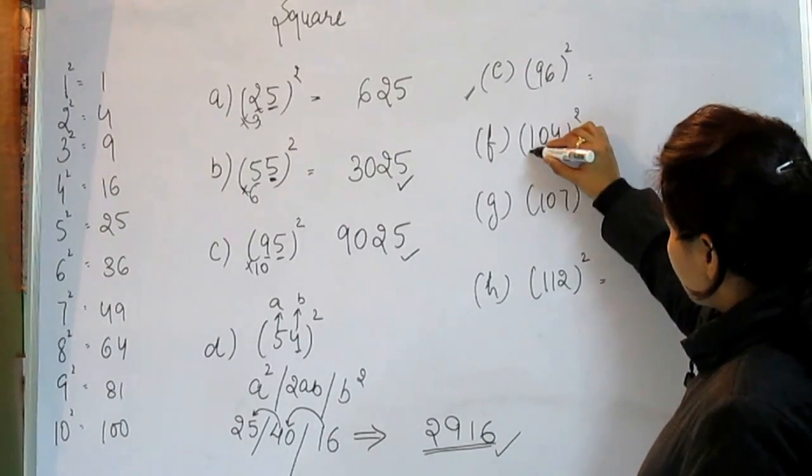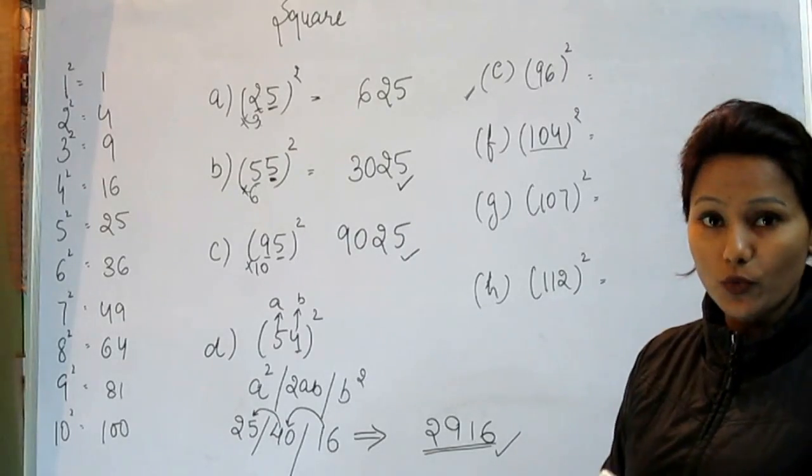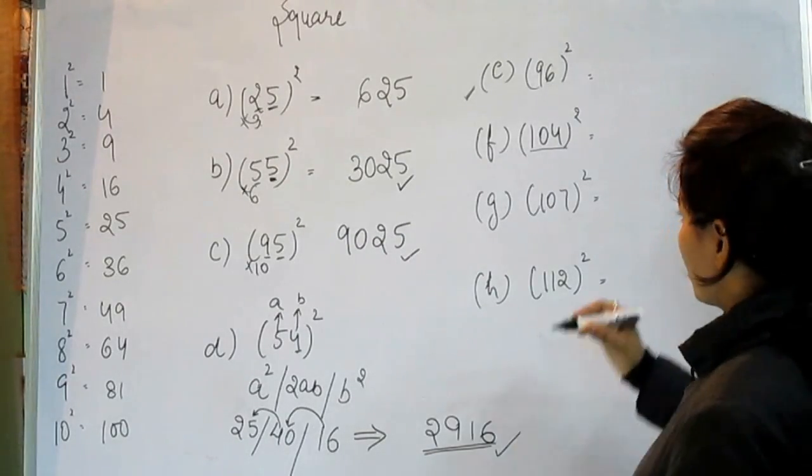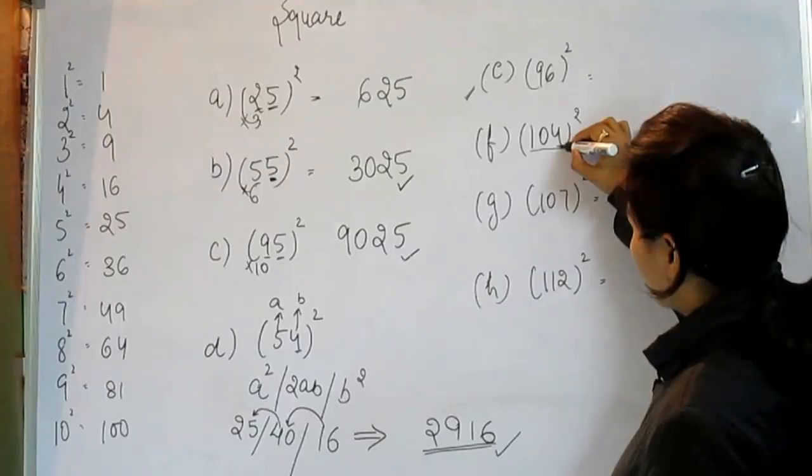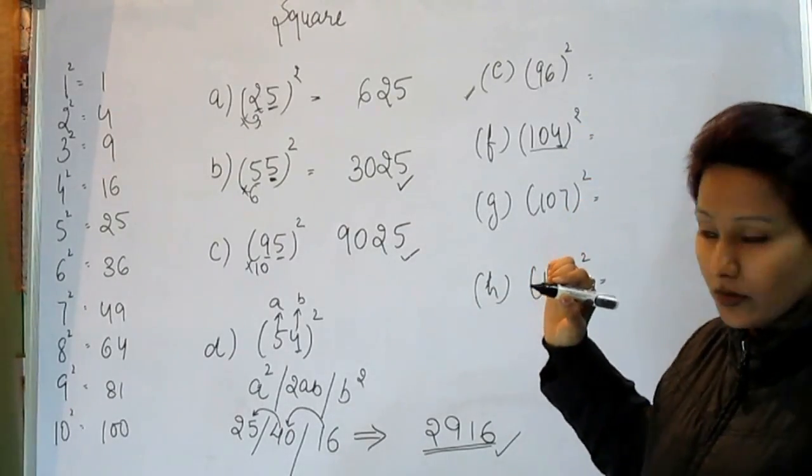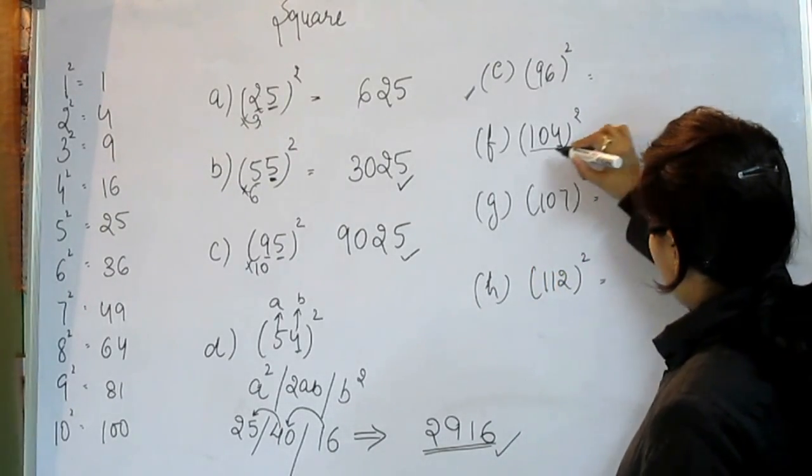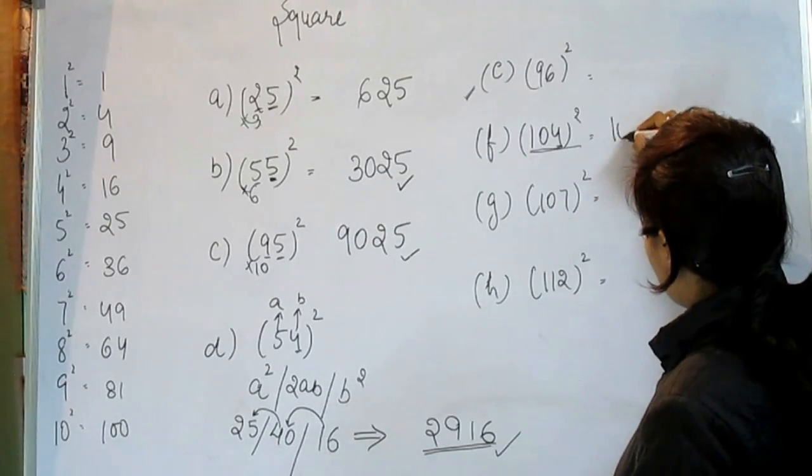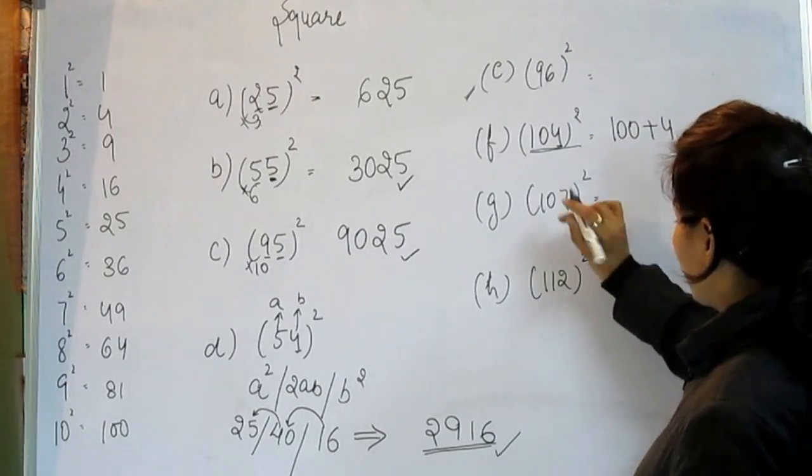This 104. All you need to do is add this 4 to the entire number. This number is this.